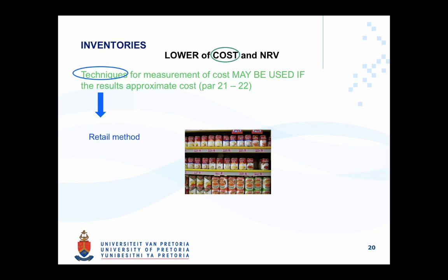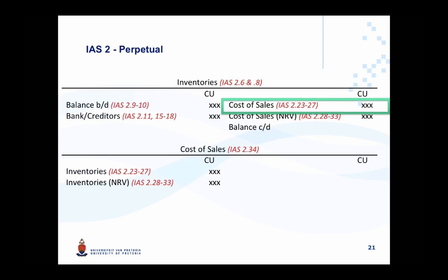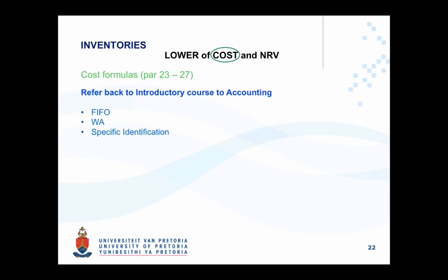An alternative to all of the above cost calculations may be the retail method of accounting. If you have a fairly generic product of which there are several items, this method may be cost beneficial. We then consider the transfer of costs incurred to acquire the inventories to cost of sales, which is generally driven by the FIFO, Weighted Average, and Specific Identification cost formulas.